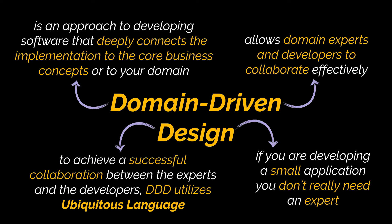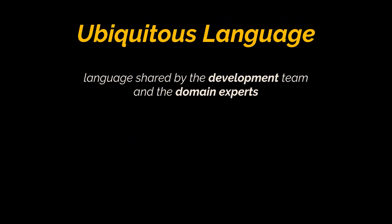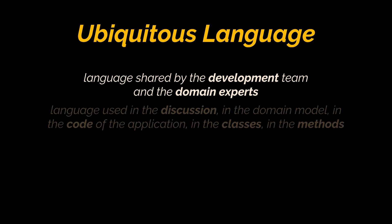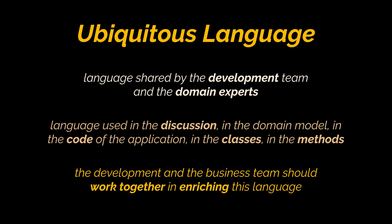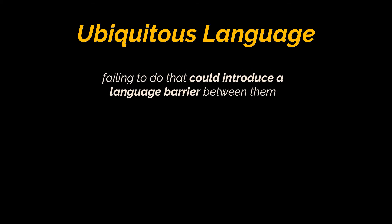The goal of practicing DDD is to handle complex scenarios in a way that domain experts and developers alike can collaborate effectively with minimum misunderstanding. To achieve a successful collaboration between experts and developers, one of the most important tools is communication. To handle communication between the involved parties, DDD utilizes ubiquitous language. Simply put, the ubiquitous language is a language shared by the development team and the domain experts — they both understand it. It is the language used in discussions, in the domain model, in the code, in the classes, and in the methods, allowing for a shorter feedback loop.